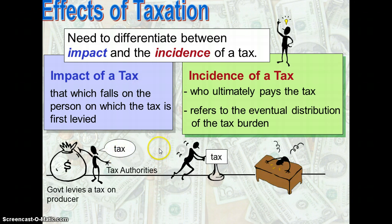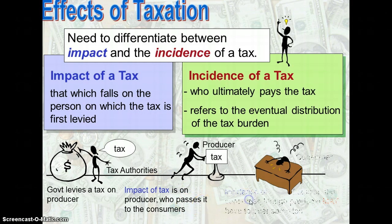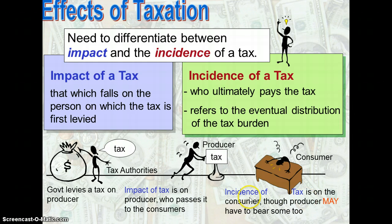To give a more diagram or graphical illustration, let us look at this. Government levies the tax on the producer, so the impact of tax is actually on the producer because it will be the first group of persons whereby the tax is first levied. Then they will ultimately pass it to the consumers. So, incidence of tax refers to the consumers — or rather, the amount of tax imposed.